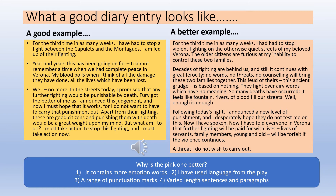Better example: 'For the third time in as many weeks I had to stop violent fighting on the otherwise quiet streets of my beloved Verona. The older citizens are furious at my inability to control these two families. Decades of fighting are behind us and still it continues with great ferocity. No words, no threats, no counselling will bring these two families together. This feud of theirs — this ancient grudge — is based on nothing. They fight over airy words which have no meaning. So many deaths have occurred; it feels like fountains, rivers of blood fill our streets. Well, enough is enough. Following today's fight I announced a new level of punishment, and I desperately hope they do not test me on this. Now I have spoken. Now I have told everyone in Verona that further fighting will be paid for with lives — lives of servants, family members, young and old — will be forfeit if the violence continues. A threat I do not wish to carry out.'